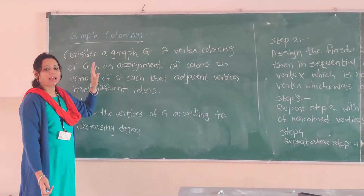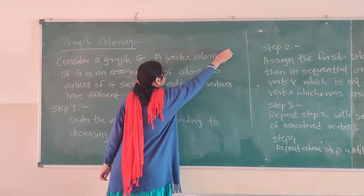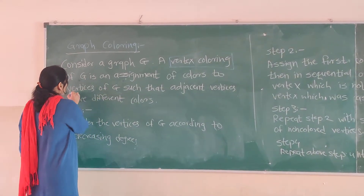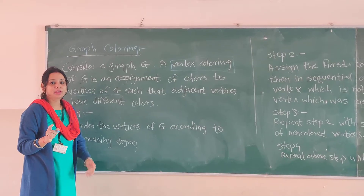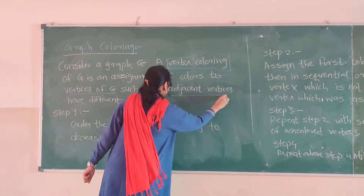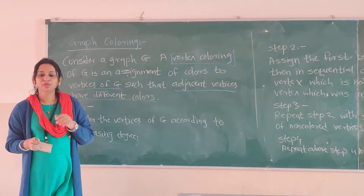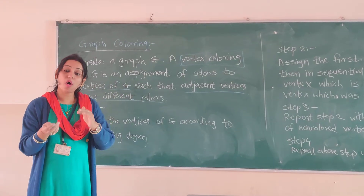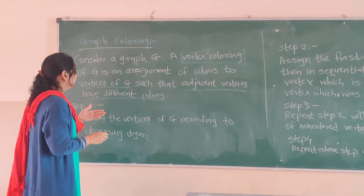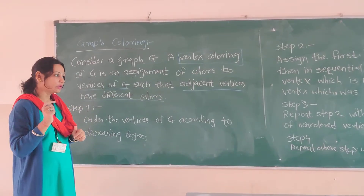Suppose we are having a graph G. The vertex coloring of graph G is an assignment of colors to all the vertices of graph G, such that adjacent vertices should have different colors. So we are coloring all the vertices of the particular graph, but the coloring should be done such that adjacent vertices have different colors.